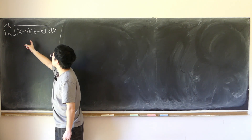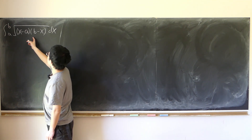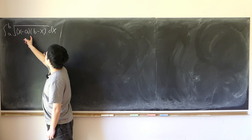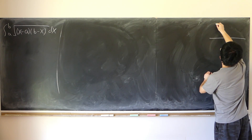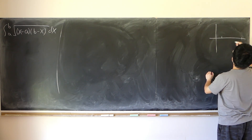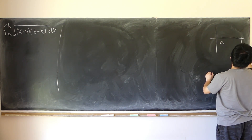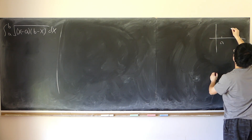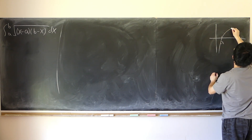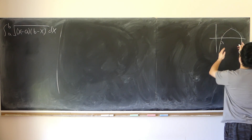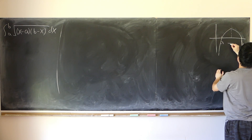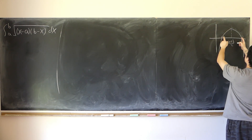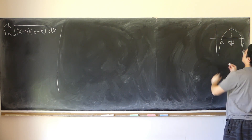Yes, because it's a parabola — negative x squared — with two roots a and b, facing downwards. Here's the apex at half of (a plus b). So for x between a and b, the inside of the square root is bigger than or equal to zero.